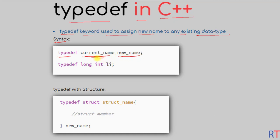For example, we can write typedef, then the existing data type like long int, and then assign a new name like li. By doing so, instead of writing long int we can write the new name li throughout our program.